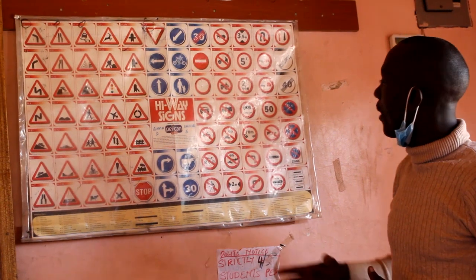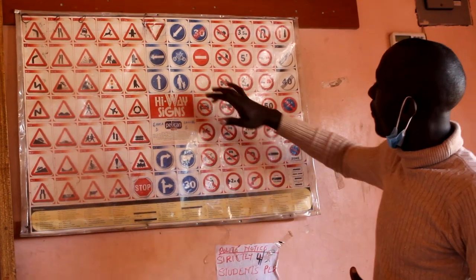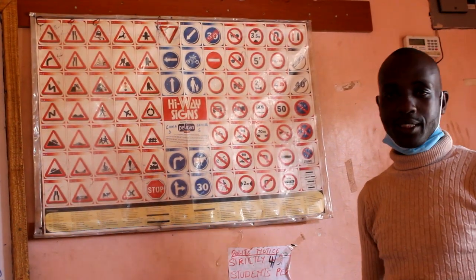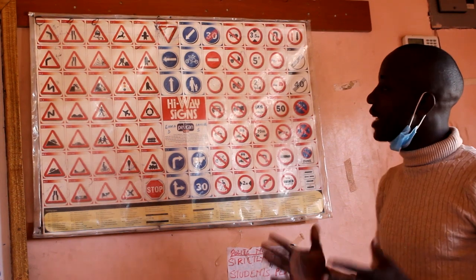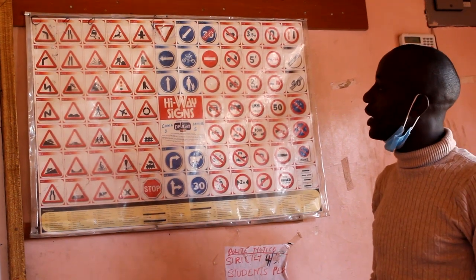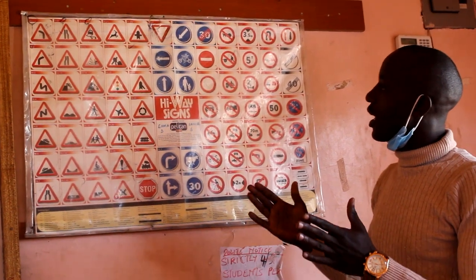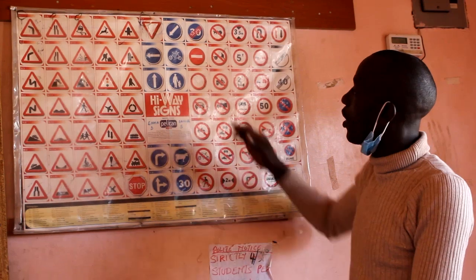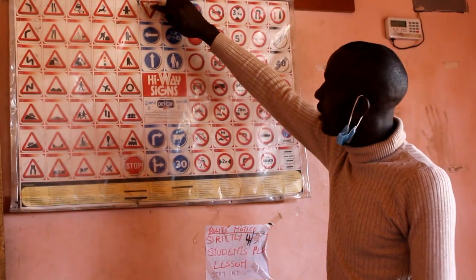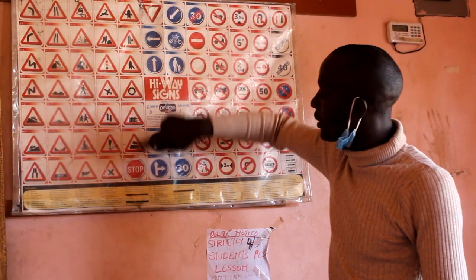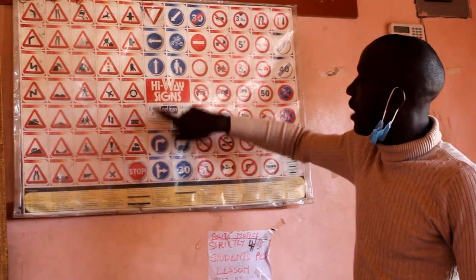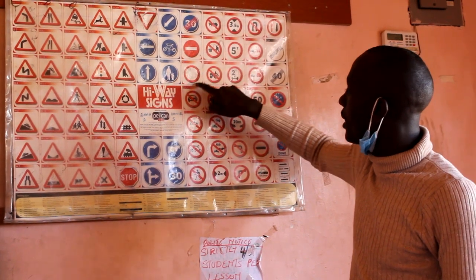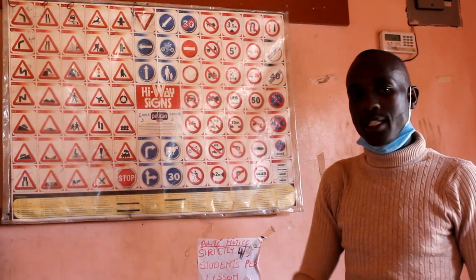And we have mandatory signs. Mandatory means it is a must. So we have three categories and ten types of signs: priority signs which are give way and stop signs, mandatory signs, and prohibitory signs.